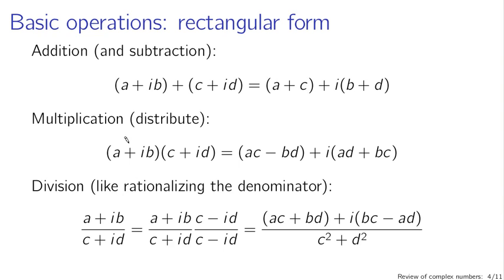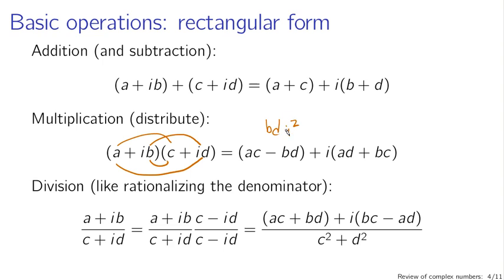Multiplication is a little more complicated — you have to distribute in the usual smiley face kind of way. The terms a times c and b times d end up together in the real part: a times c is real, and ib times id gives b times d times i squared, and i squared is minus one, so you just end up with minus bd. The imaginary part consists of i times bc plus a times id, both of which end up with plus signs.